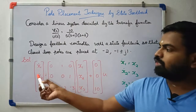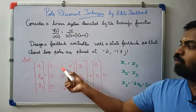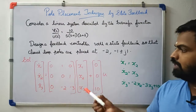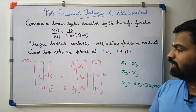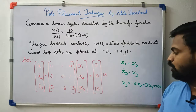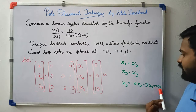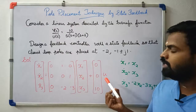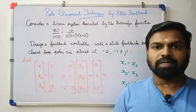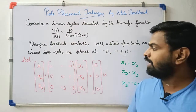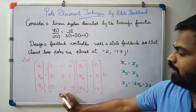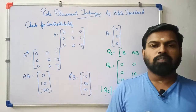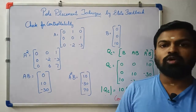The state equation in matrix form: [x1-dot, x2-dot, x3-dot] equals the A matrix [0 1 0; 0 0 1; 0 minus2 minus3] times [x1, x2, x3] plus B matrix [0; 0; 10] times u. The output equation is y equals [1 0 0] times the state vector.